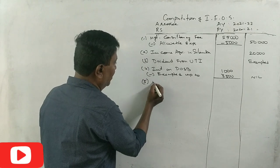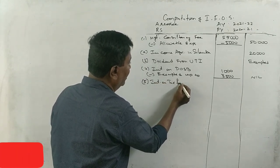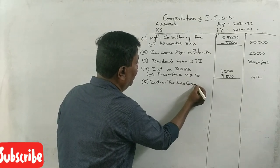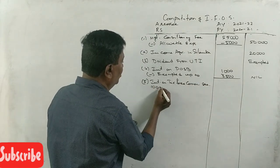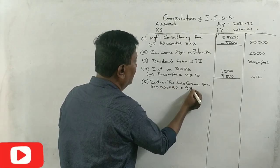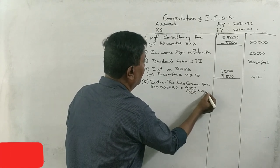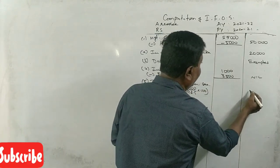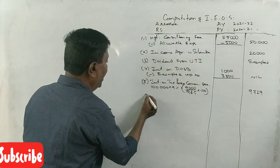Gross-up. Service interest on tax-free commercial securities. 1,00,000 into 9% is 9,000 divided by 92.5%, 9,729.